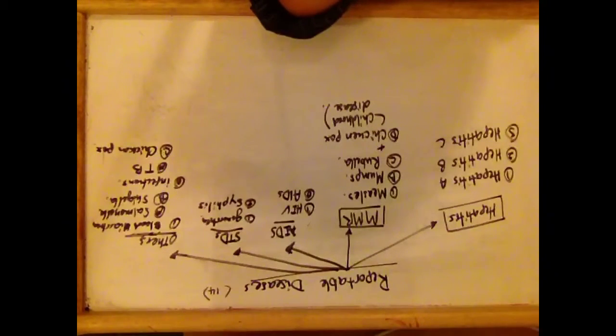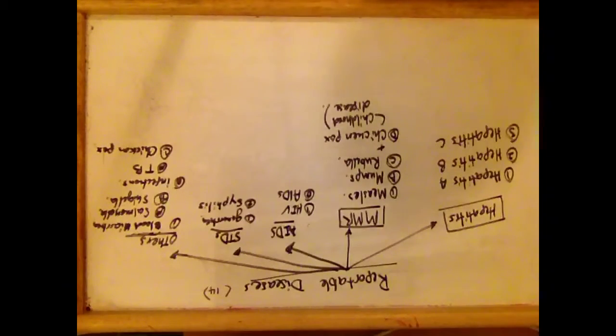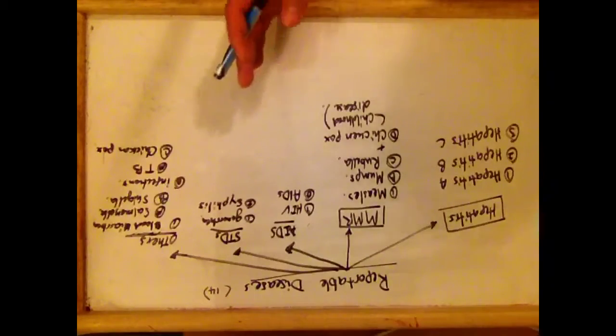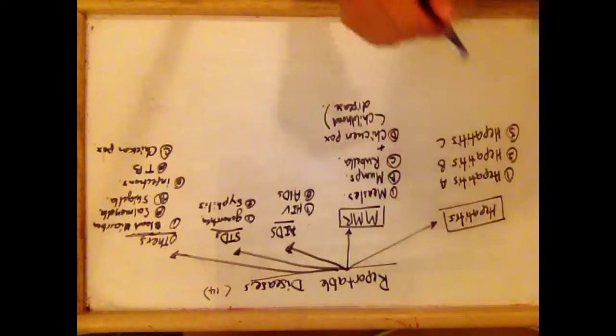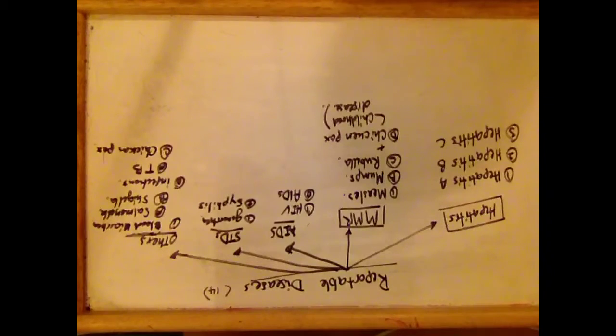Reportable diseases. Only some infectious diseases are reportable in all states and there are 14 of them. We can group these reportable diseases under each group in order for us to easily remember or memorize them. We can group them into five different groups.